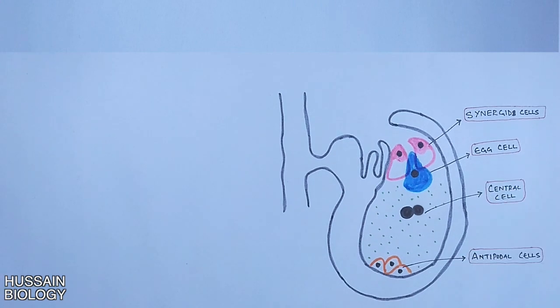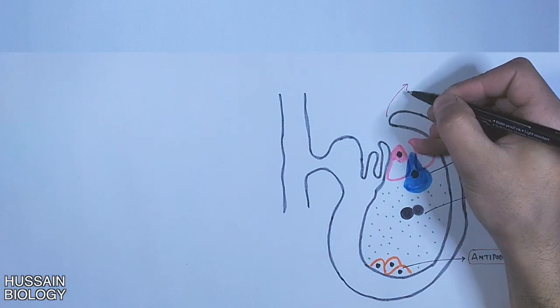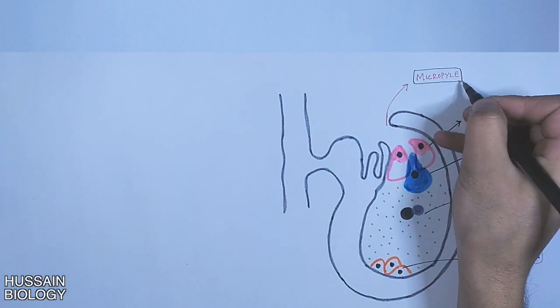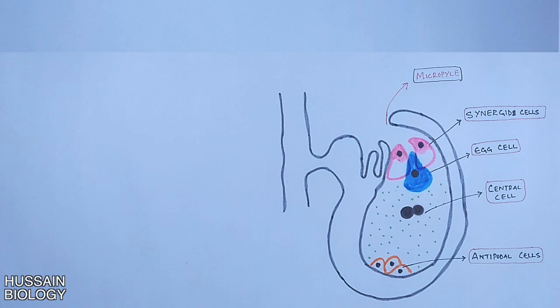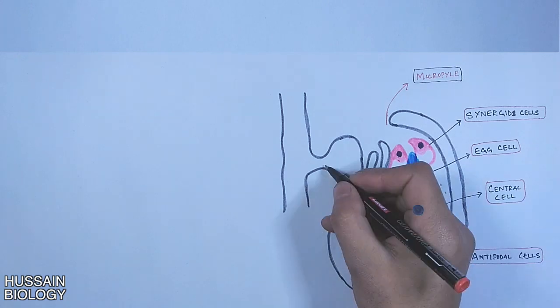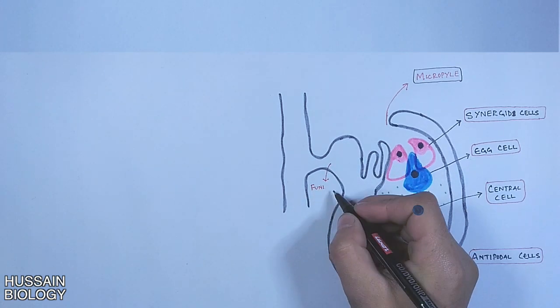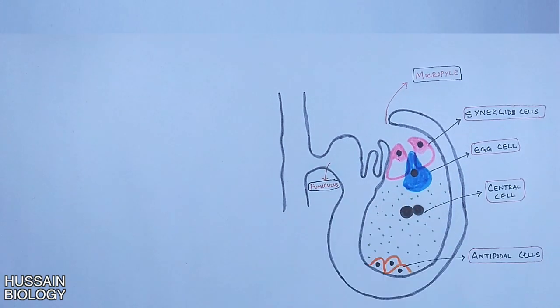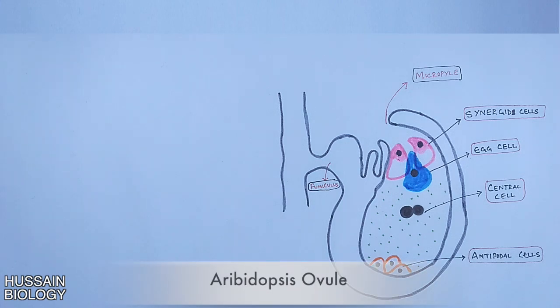On the synergid side we have the opening of the ovule called the micropyle. The part shown here is the funiculus, which connects the ovule with the placenta. These are the major structures found within the ovule.